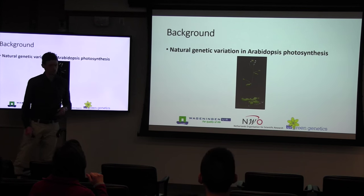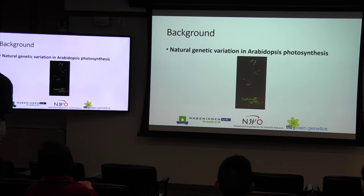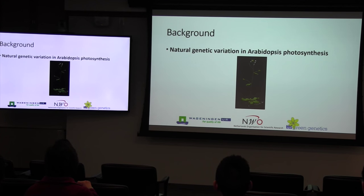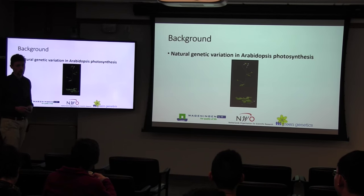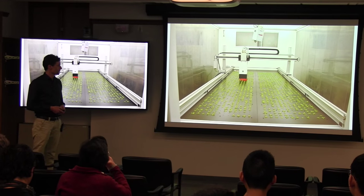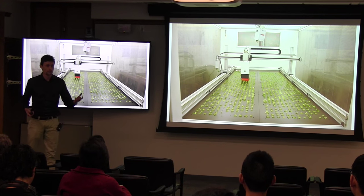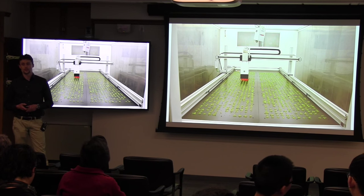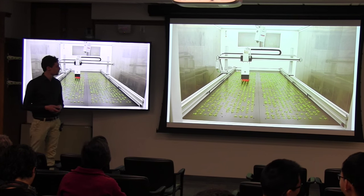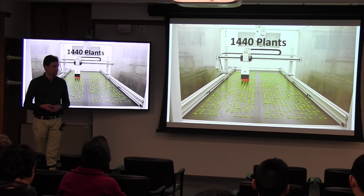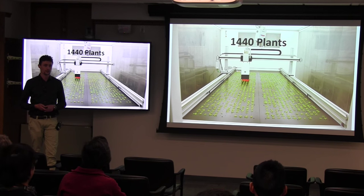My PhD was on natural genetic variation in photosynthesis. The rationale was to look at what variation exists, to see if we could find - we were doing GWAS and a couple of other things - genes relevant for this variation which could potentially be used for improving crops. In order to do that we had to come up with a way of phenotyping photosynthesis, which is not so easy. We developed a system which could measure 1,440 plants in less than an hour for photosynthetic efficiency.